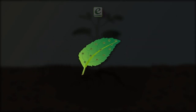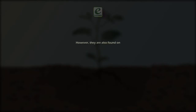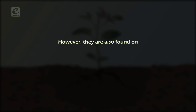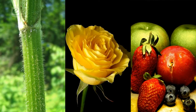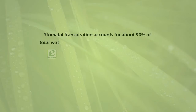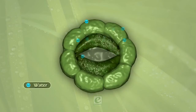Stomata are distributed mostly on the leaves; however, they are also found on young green stems, flowers, and fruits. Stomatal transpiration accounts for about 90% of total water loss from plants through transpiration. It continues as long as the stomata are open.